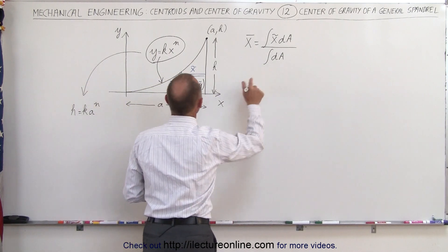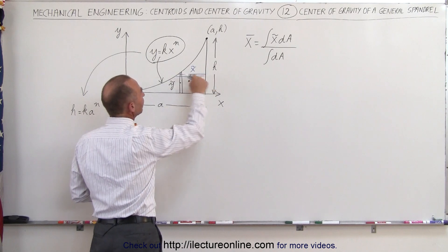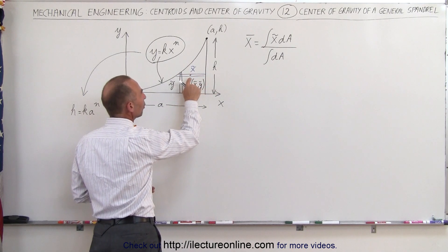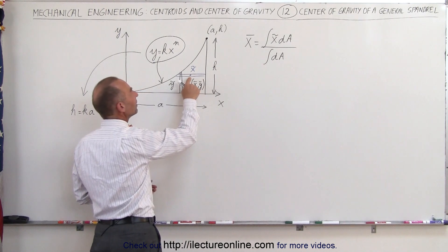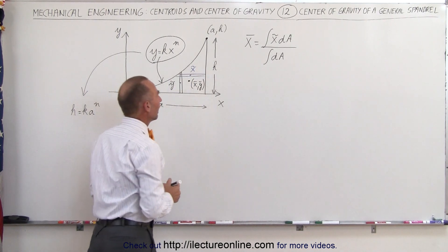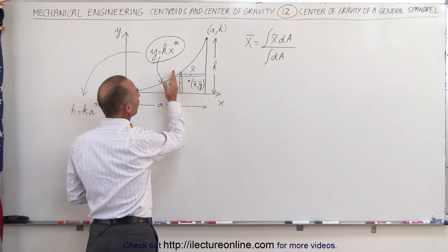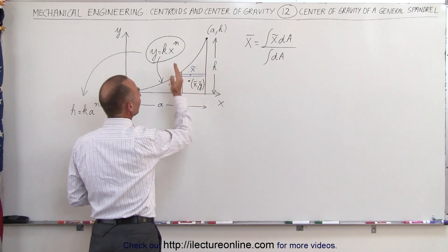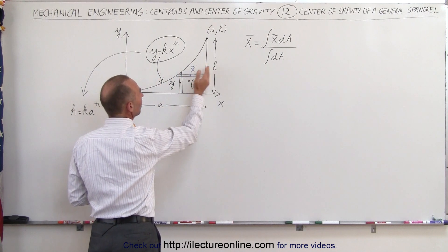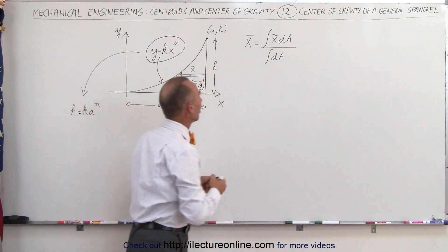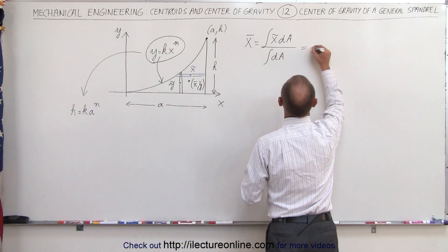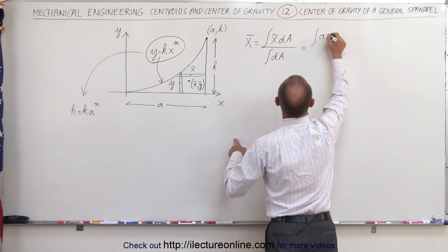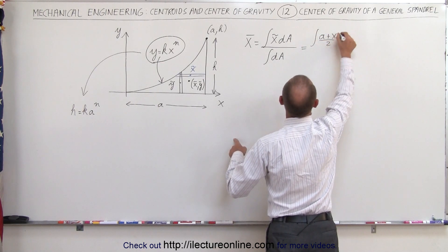This is the general equation. Notice we drew a small little dA. Now in the horizontal direction, we need to find the coordinates of the center of mass of the little strip, and that would be equal to the average distance between here and here. So we take this distance, which is a, and the distance which is x — x plus a divided by 2 would be the position of that center of mass. So this is equal to the integral of a plus x divided by 2.